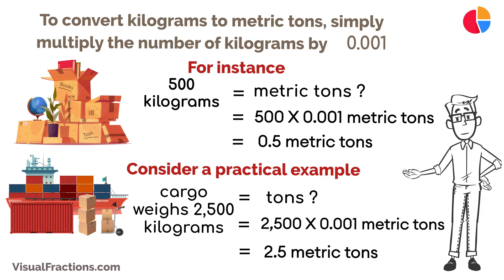There you have it. Converting kilograms to metric tons is straightforward — one kilogram equals 0.001 metric tons. With this knowledge, you can easily handle conversions for large weights, making your work in various industries much smoother.